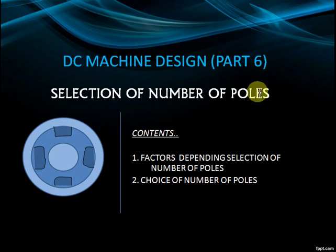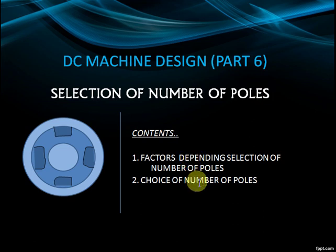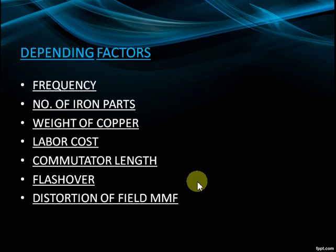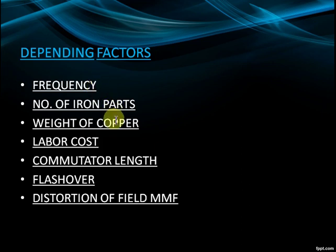DC Machine Design Part 6: Selection of Number of Poles. The contents cover: factors depending on selection of number of poles, and the choice of number of poles depending on factors including frequency, number of iron parts, weight of copper, labor cost, commutator length, flashover, and distortion of field MMF.